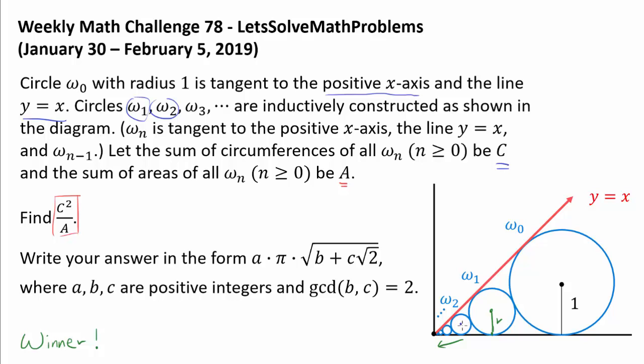By symmetry, this diagram is proportional, we know we are going to keep on multiplying by the same factor. So if radius of ω₀ is 1, and radius of ω₁ is r, radius of ω₂ is going to be r², then r³, and so on.